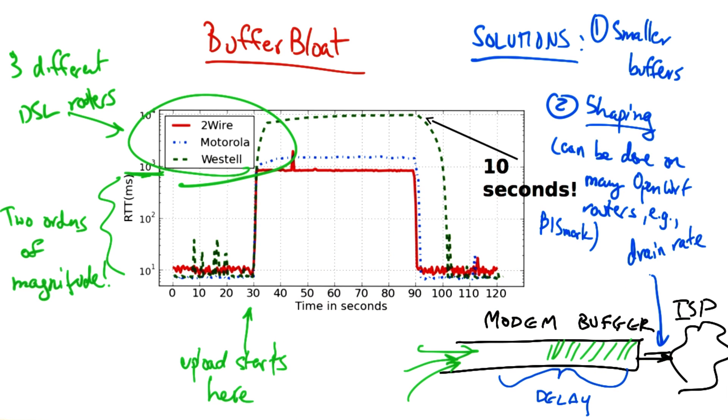This type of shaping can be done on many OpenWRT-capable routers, including the Bismarck routers that we've developed here at Georgia Tech.